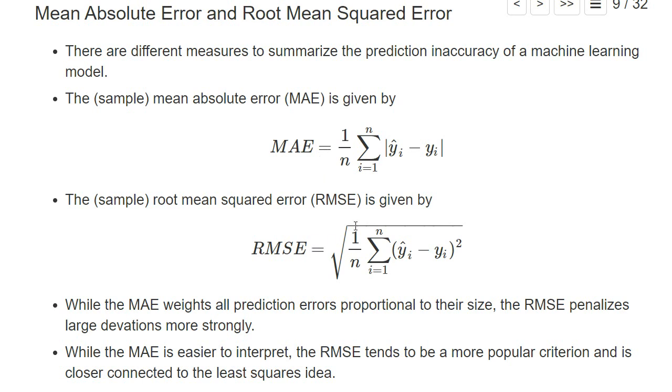It depends a little bit on taste which criteria you want to use. Personally, I think the mean absolute error is easier to interpret, but the root mean squared error is probably the more popular criterion because you have the square here, so it basically puts larger weight on very large deviations.